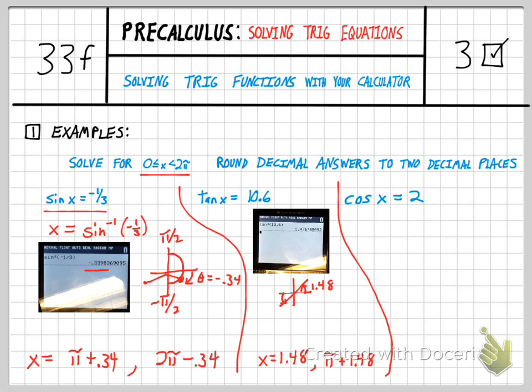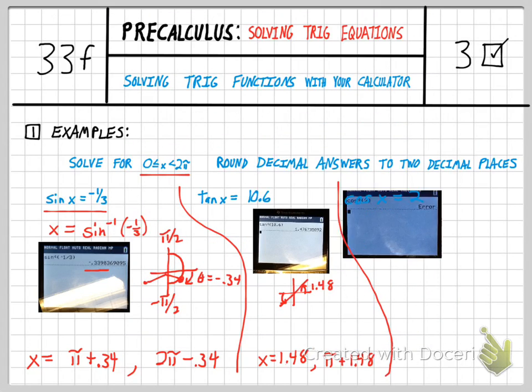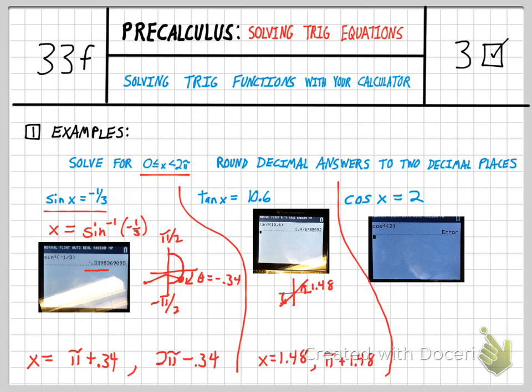Alright, last one here real quick. If I pull up my calculator picture here, I actually get an error message. And that's initially surprising, but if you think about what the question is asking, give me the angles whose cosine is 2. There is no such angle. So in this case, there are no solutions.